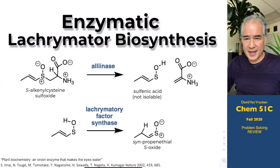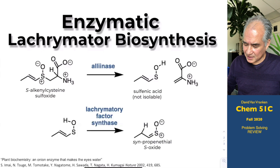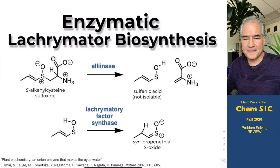Any compound that causes you to tear is referred to as a lacrimator. We have compounds in our laboratory like isocyanates that are very powerful lacrimators — very small amounts, like tear gas. But what's coming out of onions is a compound that contains a carbon-sulfur double bond, and you haven't seen anything like that.